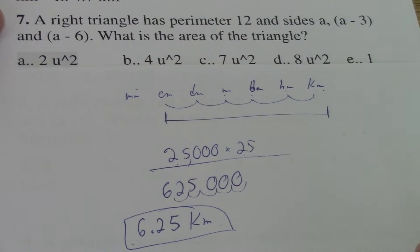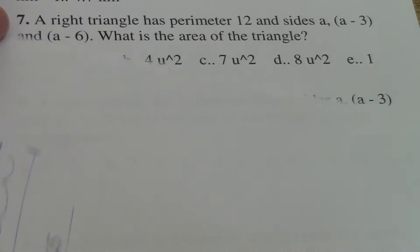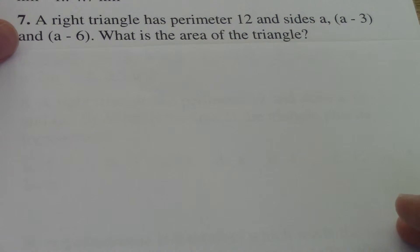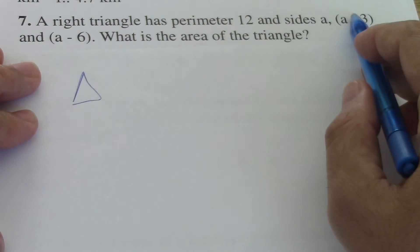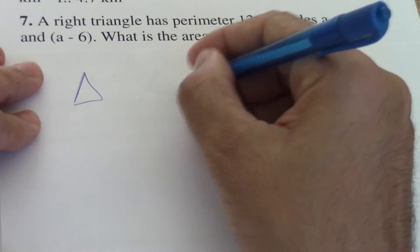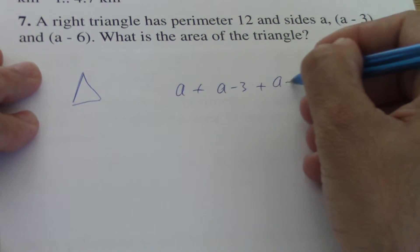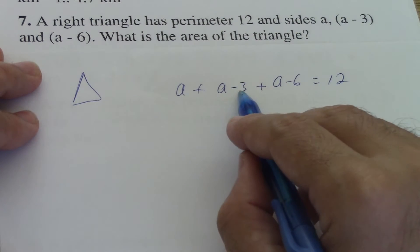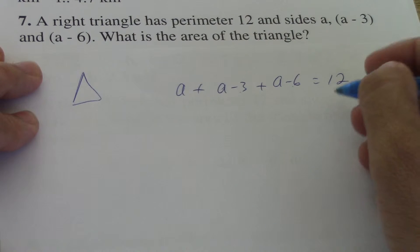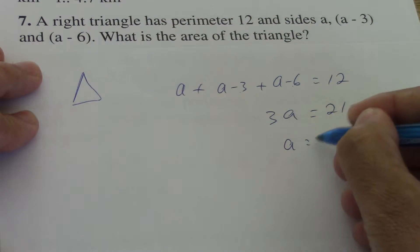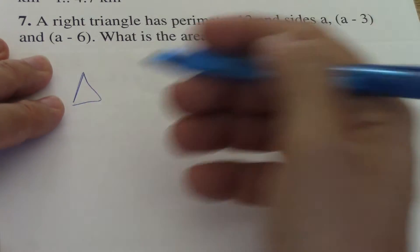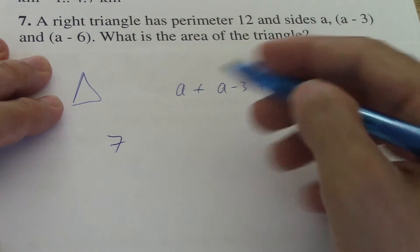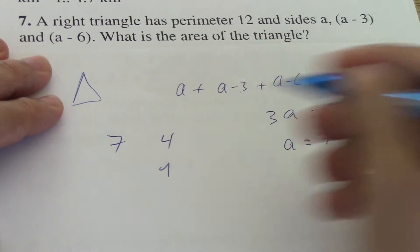Let's take a look at number seven. It says that a right triangle has a perimeter of 12 and sides A, A minus 3, and A minus 6. What is the area of the triangle? So we have a triangle here that the perimeter is 12. That means the sum of all those sides is equal to 12. So A plus A minus 3 plus A minus 6, that's equal to 12. So 3 and 6 is 9, plus 12 is 21. That would be equal to 3A, so A is equal to 7. That means that the sides are one is 7, the other one is 7 minus 3, it's 4, and the other one is 7 minus 6, it's 1.